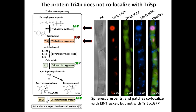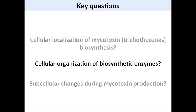To our surprise, when we tagged the first enzyme of the trichothecene metabolism — Tri5 — we found that the trichodiene synthase is not localized at those spherical structures and does not co-localize with Tri4 RFP. We also do not see GFP fluorescence in vacuoles or lipid bodies. This was somewhat surprising, but it is worth noting that Tri5 still catalyzes a step that produces a non-toxic compound.